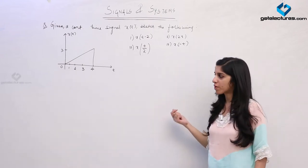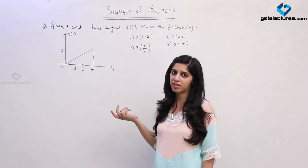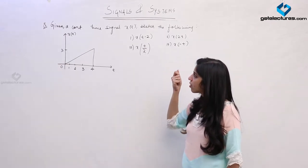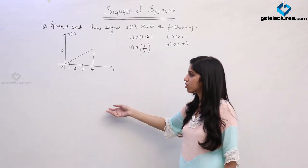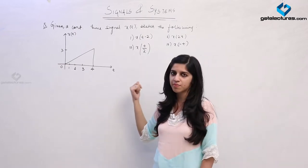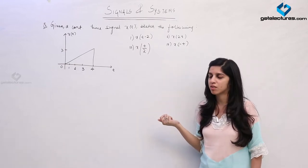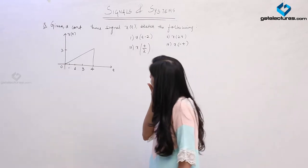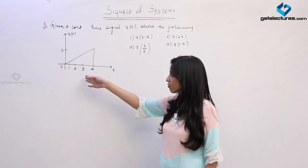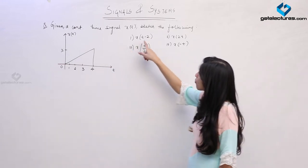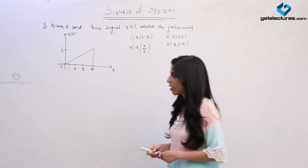We are going to look at some questions based on operations on signals: time scaling, time shifting, and time reversal. Here is a question — they have given you a continuous time signal. We are going to look at a question on continuous time signal, then we are going to look at a similar model of question for discrete time signal also. They have given us a continuous time signal X(t) and are asking you to perform these operations on this signal.